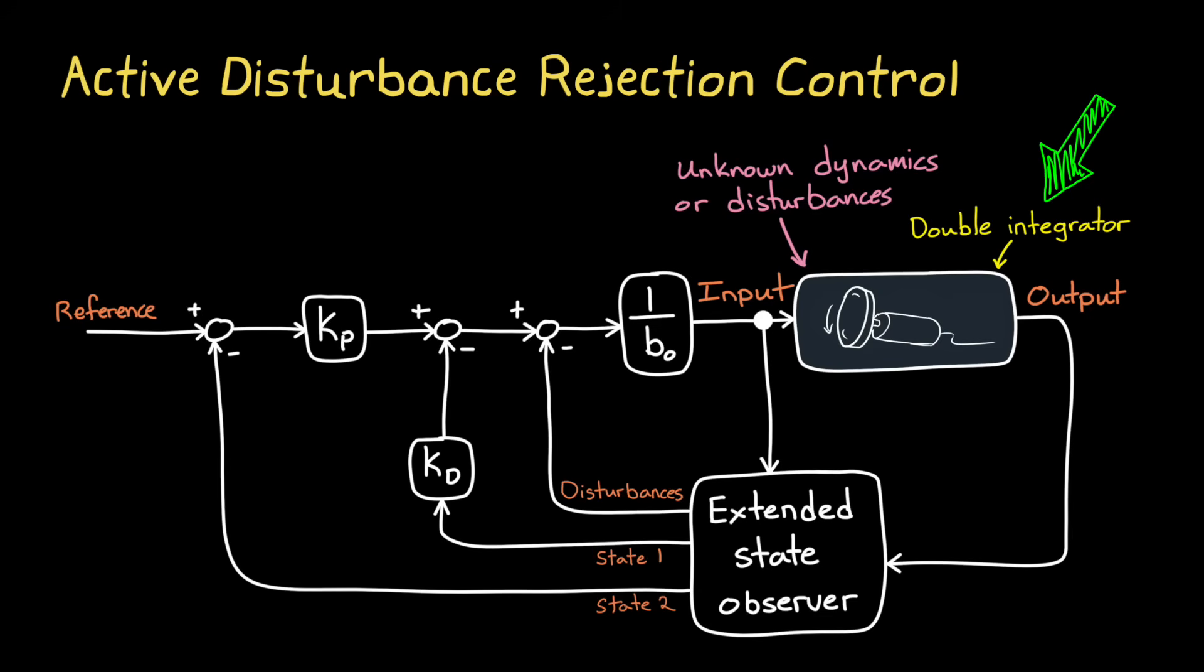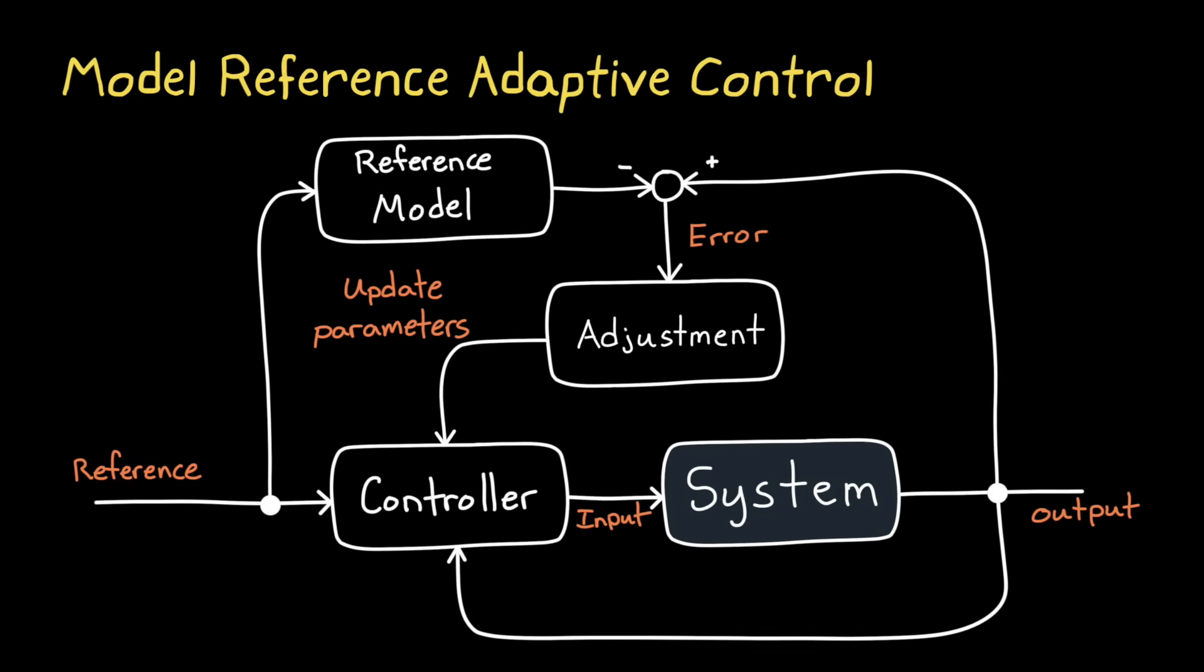And another neat idea is Model Reference Adaptive Control, or MRAC. MRAC is an adaptive control strategy, which means that it's changing over time to converge on the solution. And what it's converging to is that the output of your system follows the behavior of a predefined reference model. So instead of needing a model of your actual system, you define an ideal model that you want your system to behave like, and MRAC will adjust over time to try to match it.